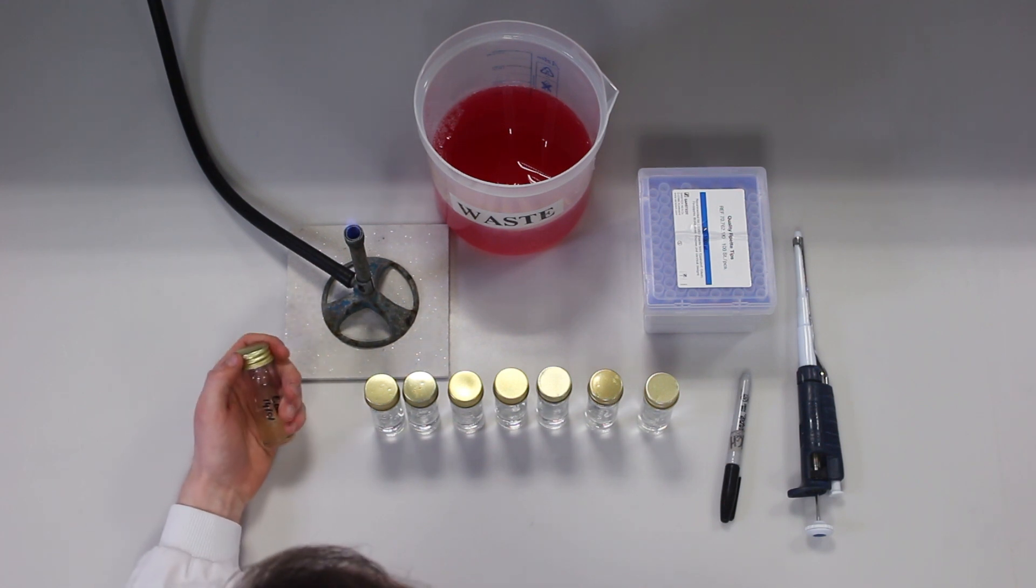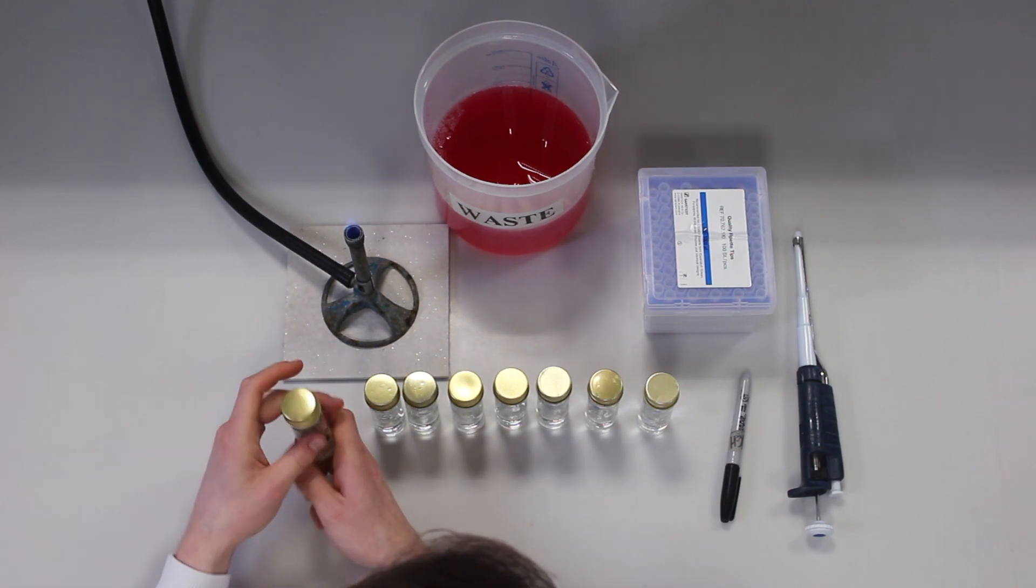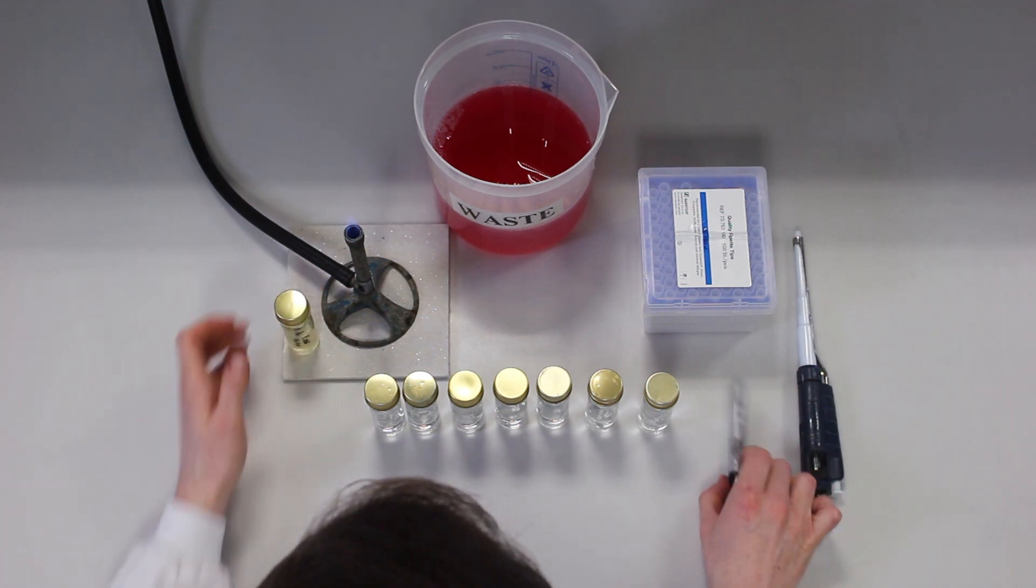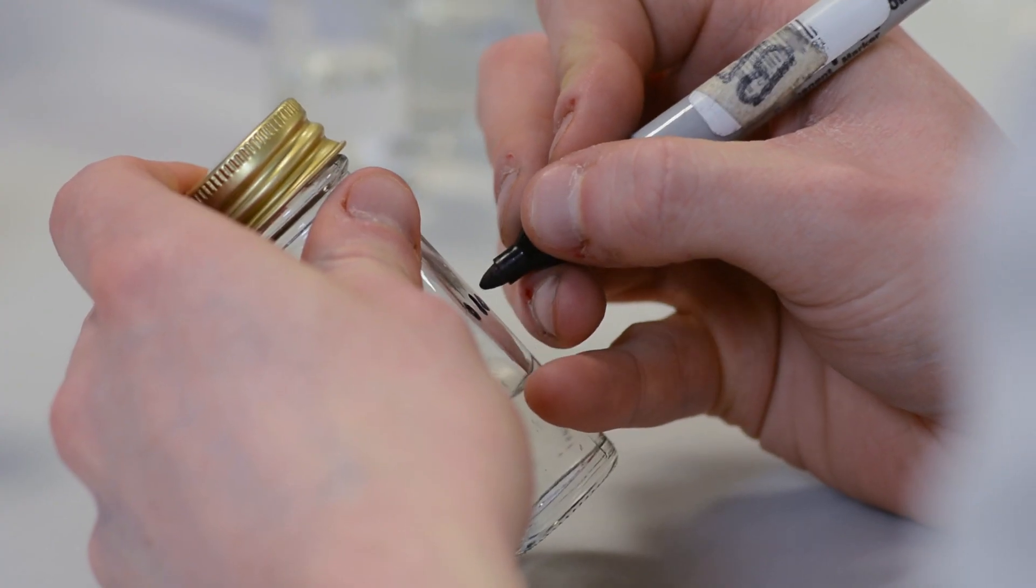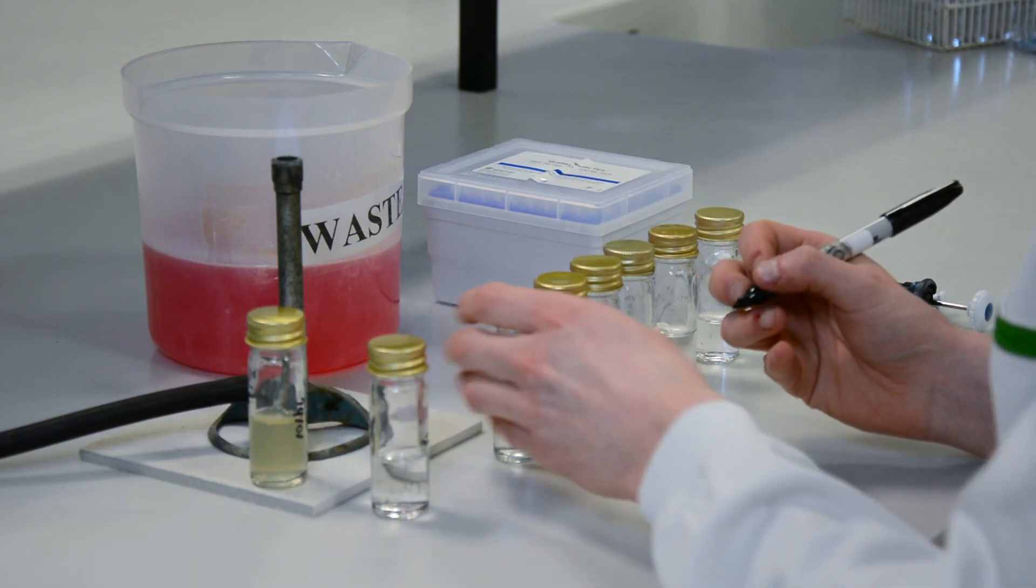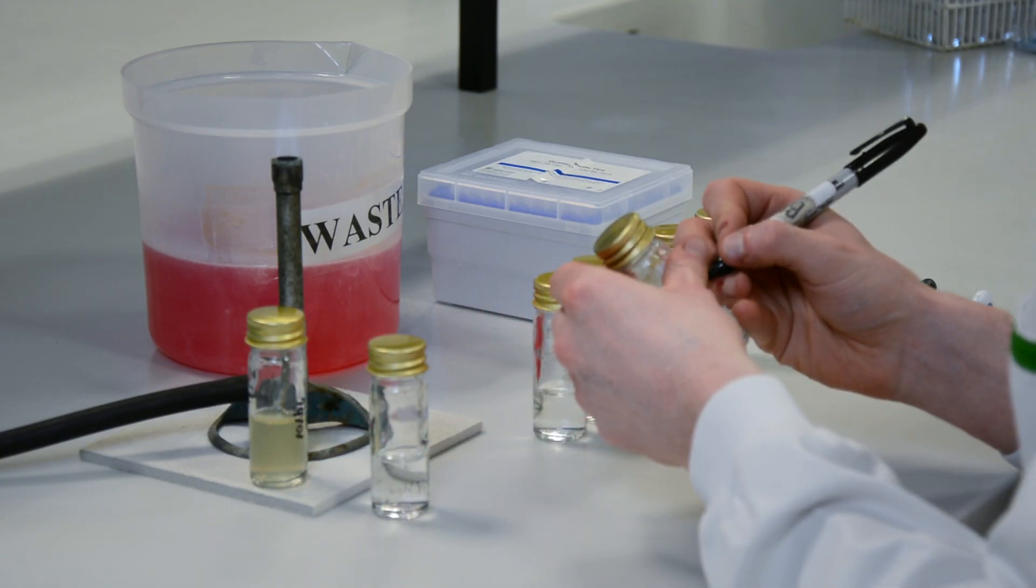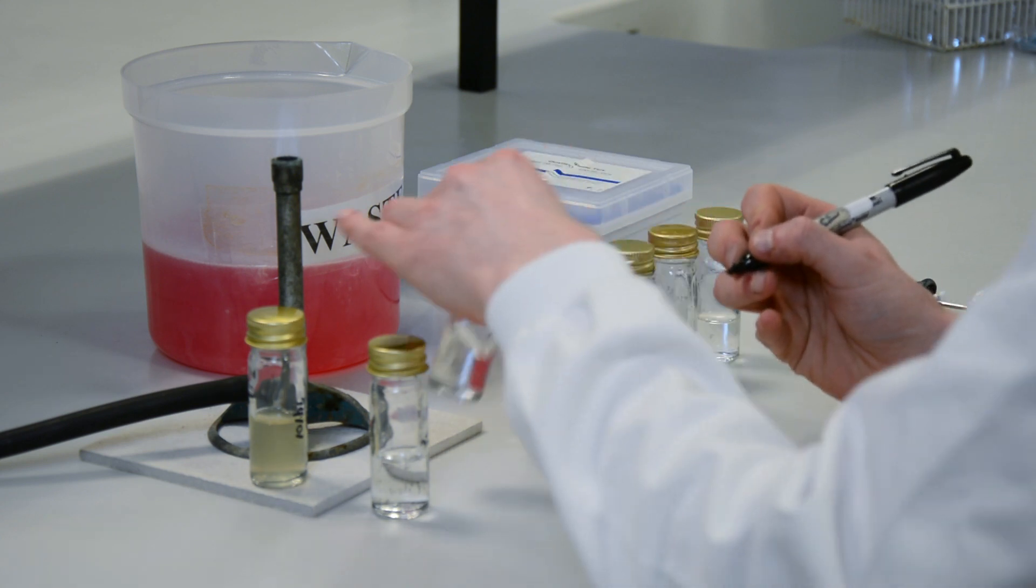First, you need to label your bottles with the information described previously. In this case, we are going to take 7 bottles containing 9ml of quarter strength ringer solution and label the bottles with the dilution series from 10 to the minus 1 down to 10 to the minus 7.